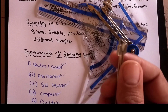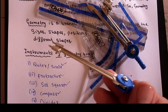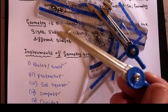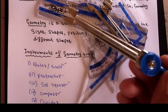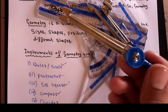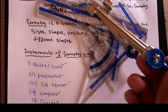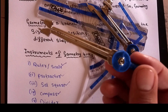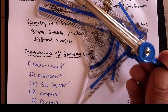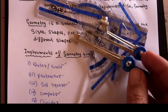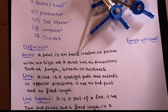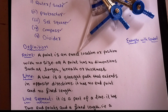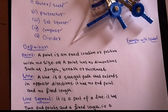The next is the divider. The function of the divider is that with its help we can divide a line, or mark different points on a line for measurement purposes. We can also use it to mark equal distances on a line.